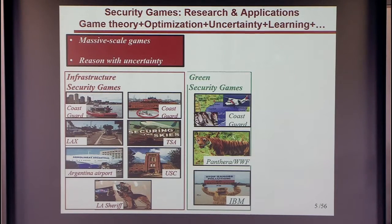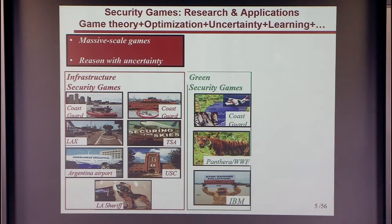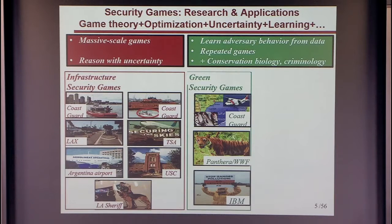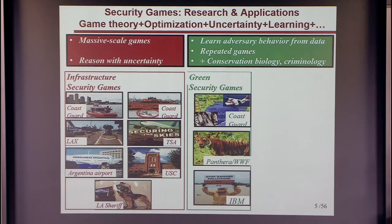Where we are going next is green security — collaborations with Panthera, World Wildlife Fund, and other NGOs for protection of wildlife and endangered species, with the Coast Guard for protection of fisheries in the Gulf of Mexico, and with IBM for randomized inspections of factories that might be polluting rivers. What's new here is that we have a lot of data from poaching attacks and illegal fishing, which allows us to learn adversary models from data, improve our strategies, and play again — making it a repeated game. We can also bring in insights from conservation biology and criminology.